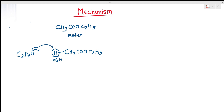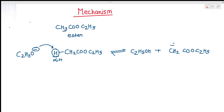In Step 1, the ethoxide ion abstracts the alpha hydrogen — this is an equilibrium reaction. We get C₂H₅OH plus ⁻CH₂COOC₂H₅, which carries a negative charge. This species with a lone pair of electrons on carbon is called the enolate anion.